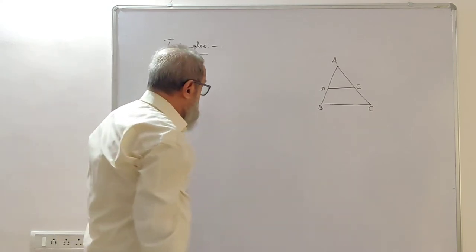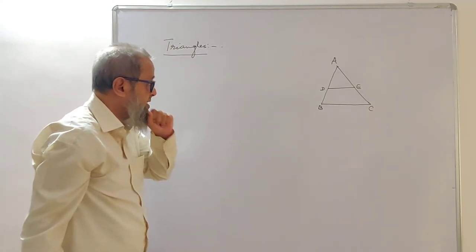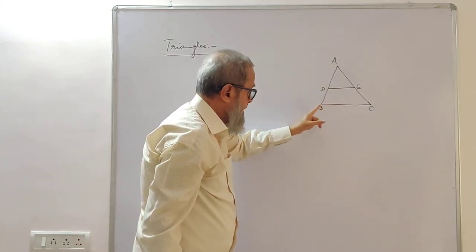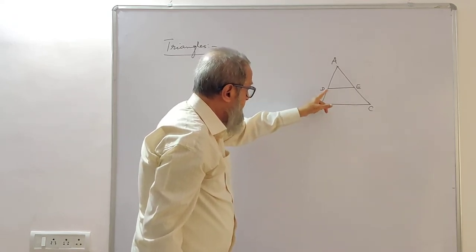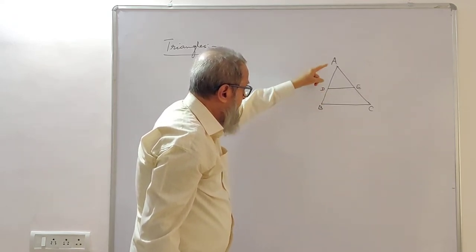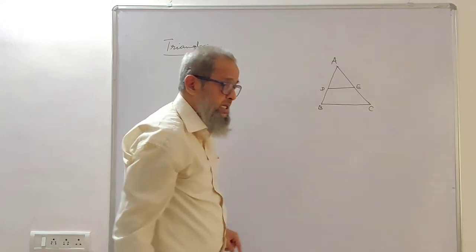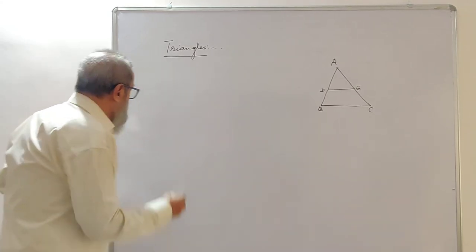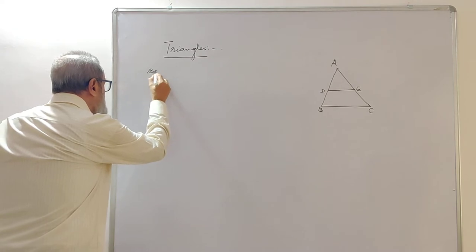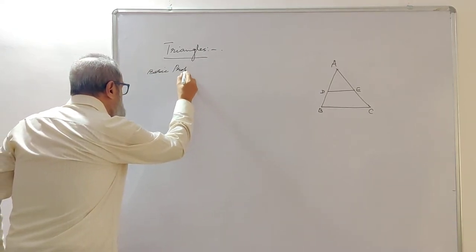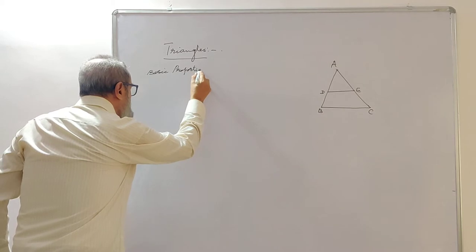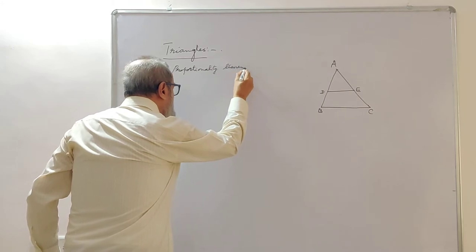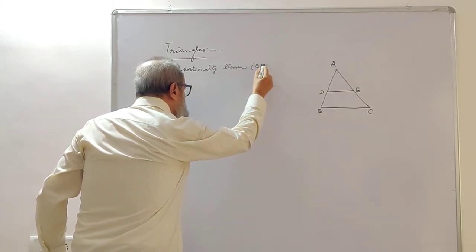Now, the Basic Proportionality Theorem states that if in a triangle we draw a line parallel to one of the sides, then the line so drawn will cut the other two sides in the same ratio or proportion. This theorem is called the Basic Proportionality Theorem, or BPT.